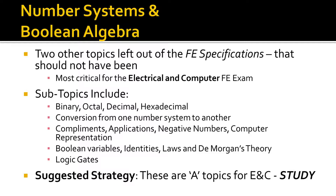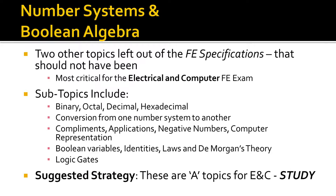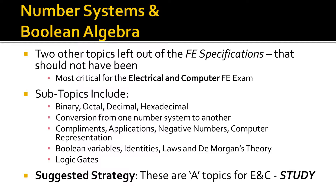Number systems and Boolean algebra are two topics surprisingly left out of the FE specifications, which is unfortunate because they are important — especially if you're taking the electrical and computer engineering FE exam. Subtopics include binary, octal, decimal, and hexadecimal numbers; conversions between number systems; complements and their applications such as negative numbers and internal computer representation; Boolean variables, identities, laws, and DeMorgan's theorem; and logic gates. DeMorgan's theorem is critical — it's referenced in the reference manual but you have to understand how they represent it, as the formulas may differ from textbook or PPI manual notation. These are key topics for electrical and computer, so if you're taking that exam, study this topic well.